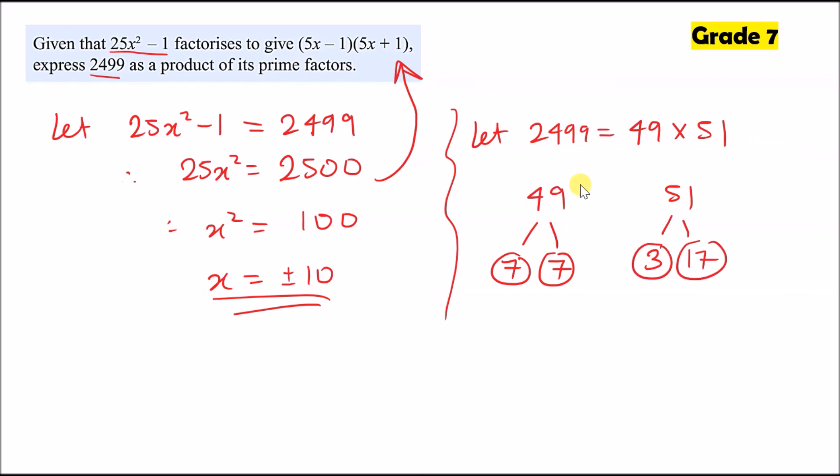Now, putting it all together, this means that 2,499 is equal to, and I'll do it in order, 3 times, and you got 2 sevens, so 7 squared times 17. And that's it, this is fully broken down.